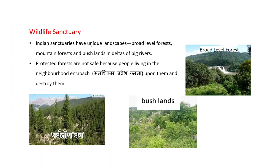Indian sanctuaries have unique landscapes: broad-leaved forests, mountain forests, and bushlands in the deltas of big rivers. With the help of pictures you can understand — this is a broad-leaved forest, this one is a mountain forest (in Hindi, Parvati van), and this is bushlands, a clearly protected forest.